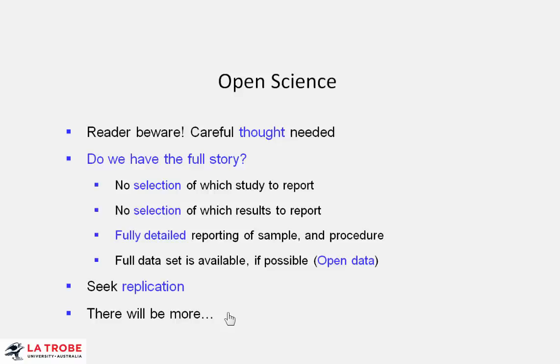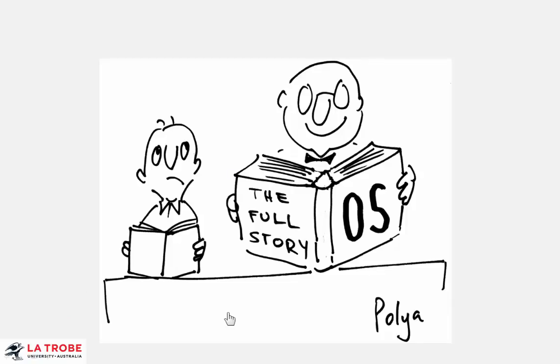There'll be more about open science as we go through the book. It's one of the strong themes, one of the most exciting things happening at the moment. But for this beginning, think of open science as requiring the full story. As you read anything about research, you're asking: what am I not being told? How else could this be interpreted? Is this really complete and convincing? And correspondingly, when you're reporting your own work, it's incumbent on you to tell the full story, to give fully detailed information about everything you did. That's good open science practice.